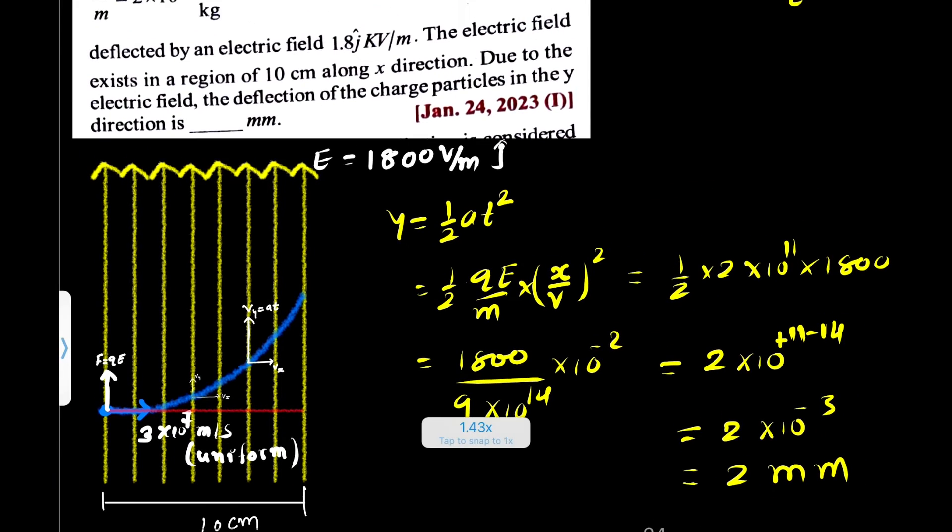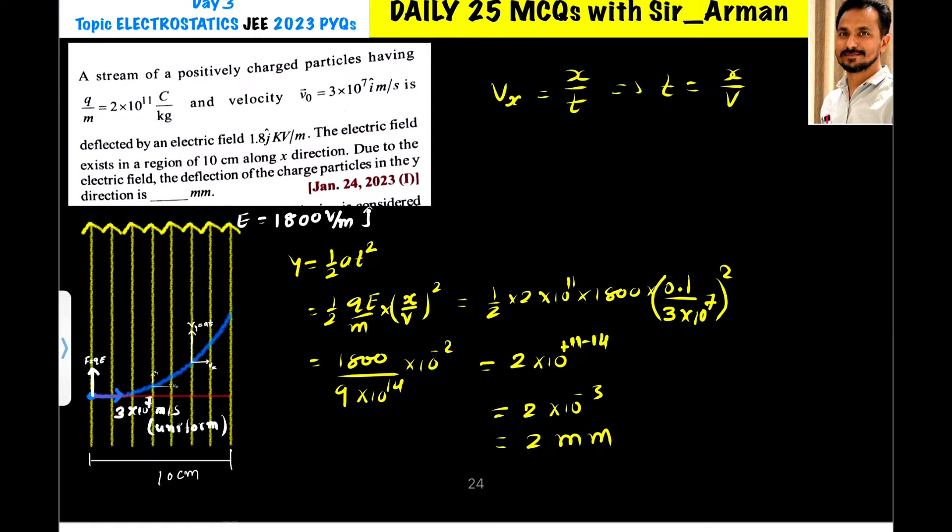Now what is happening here, as the motion in the vertical direction is uniformly accelerated, we can use this second equation of motion. So y is equals to half a t square. Now what is a here?